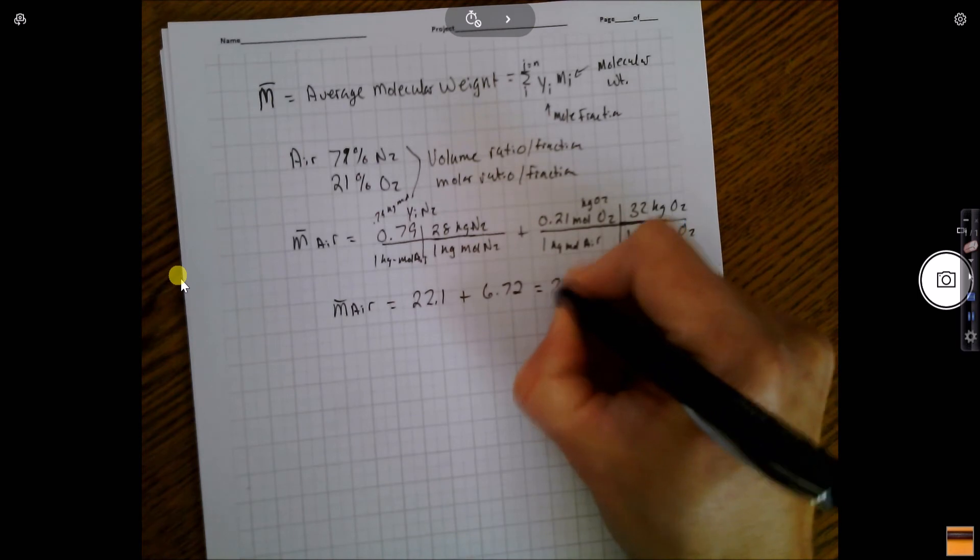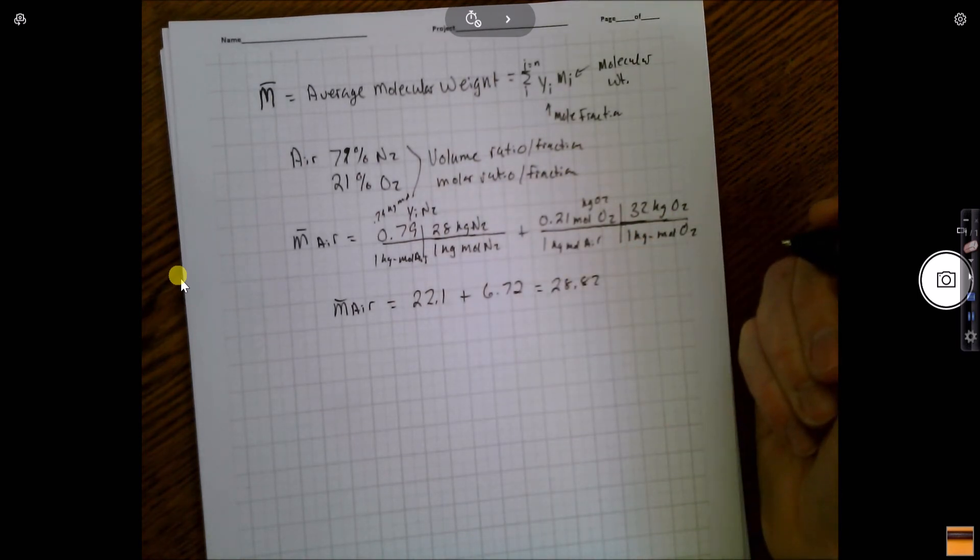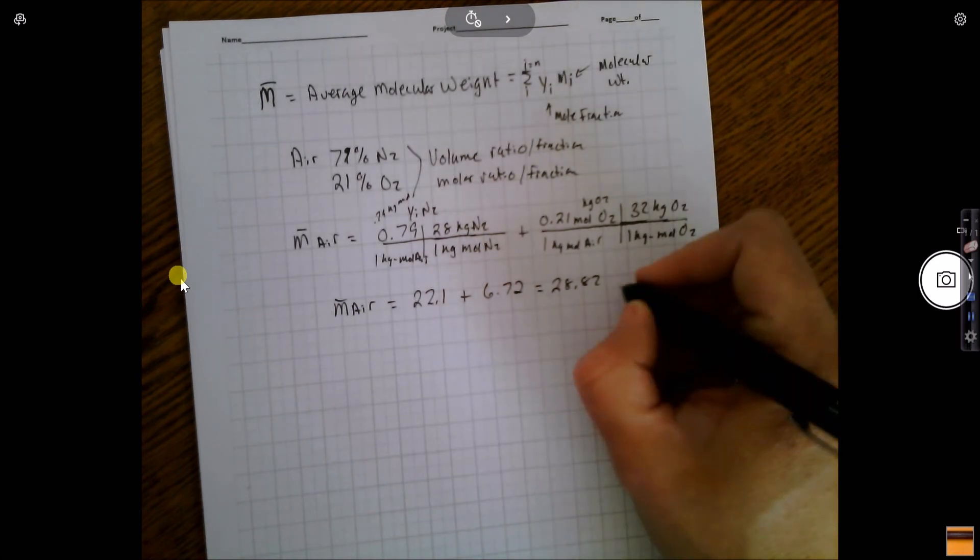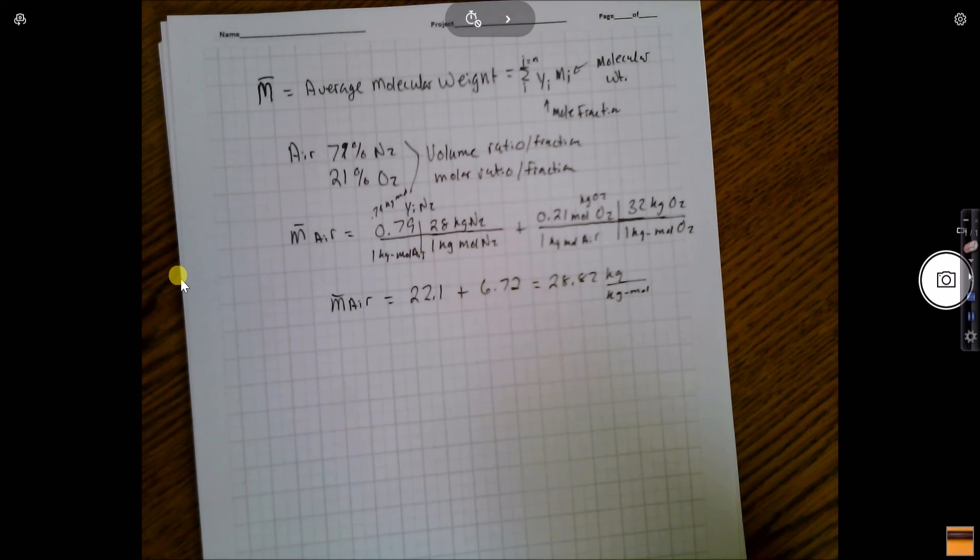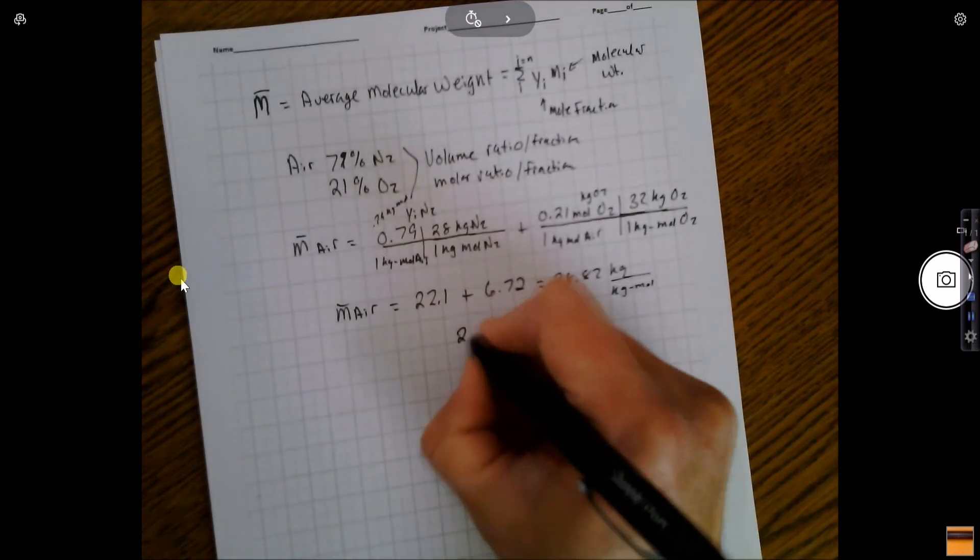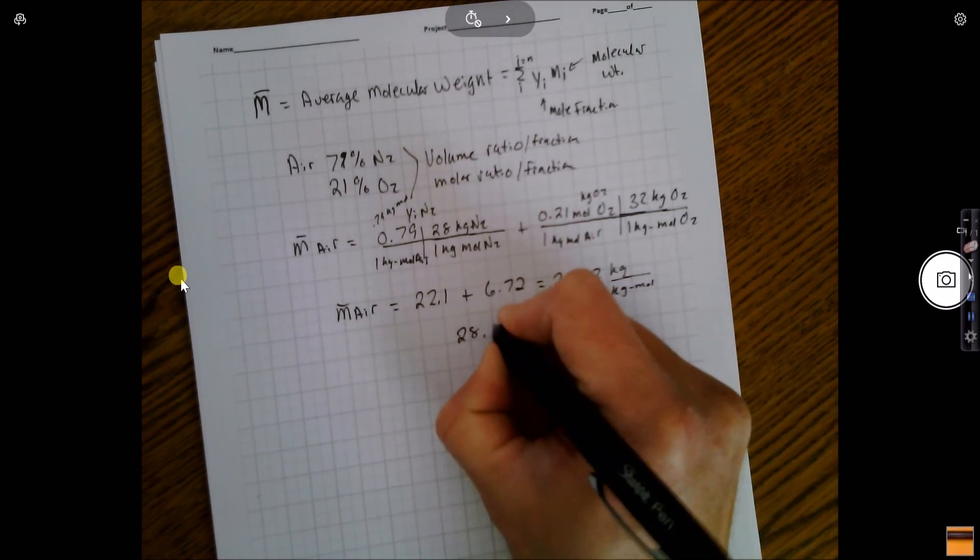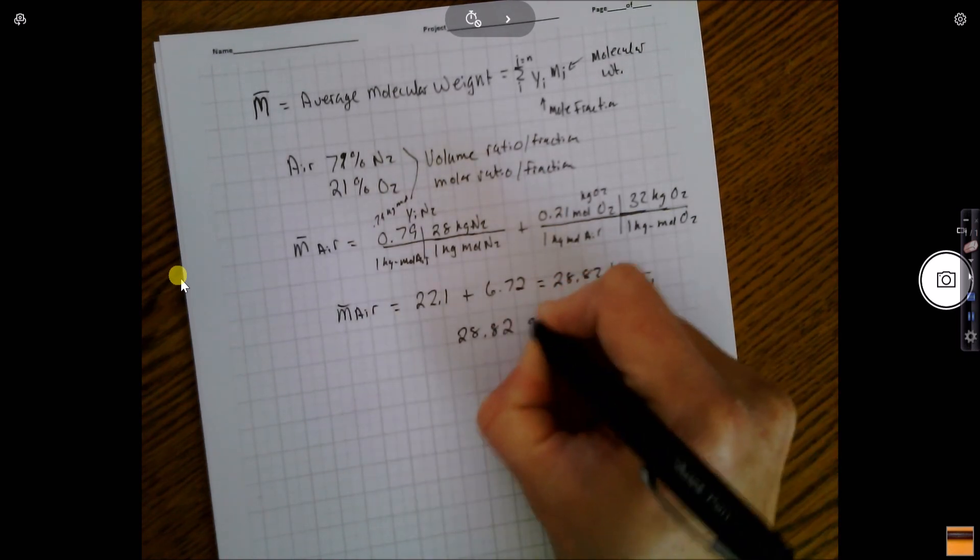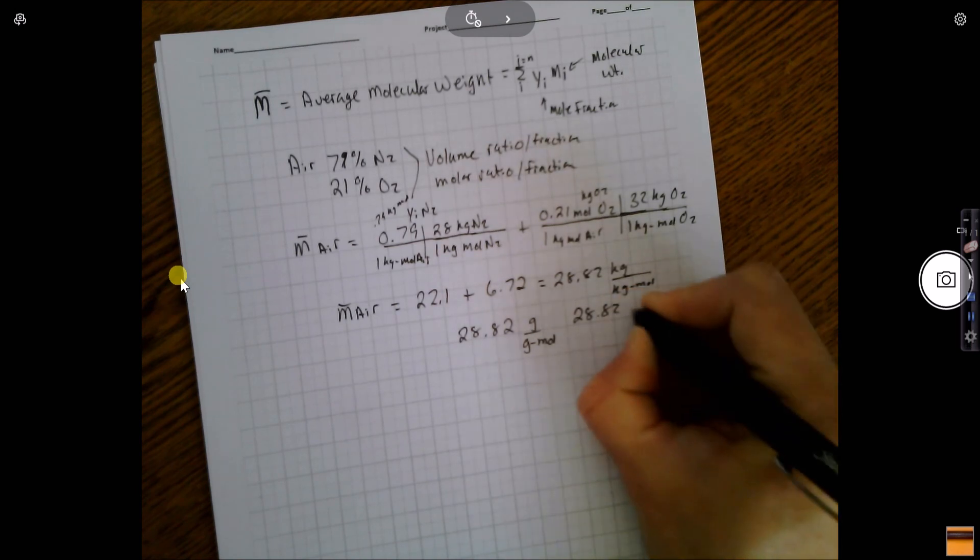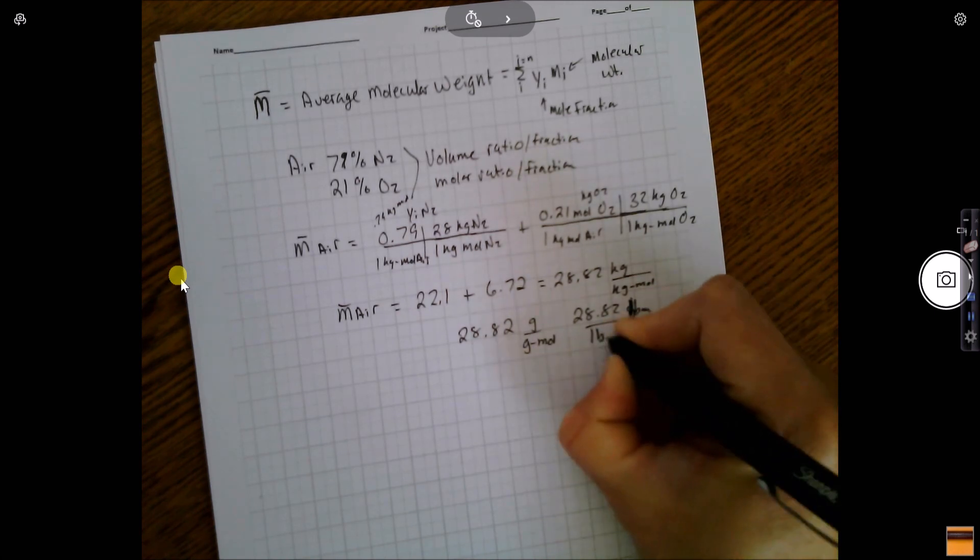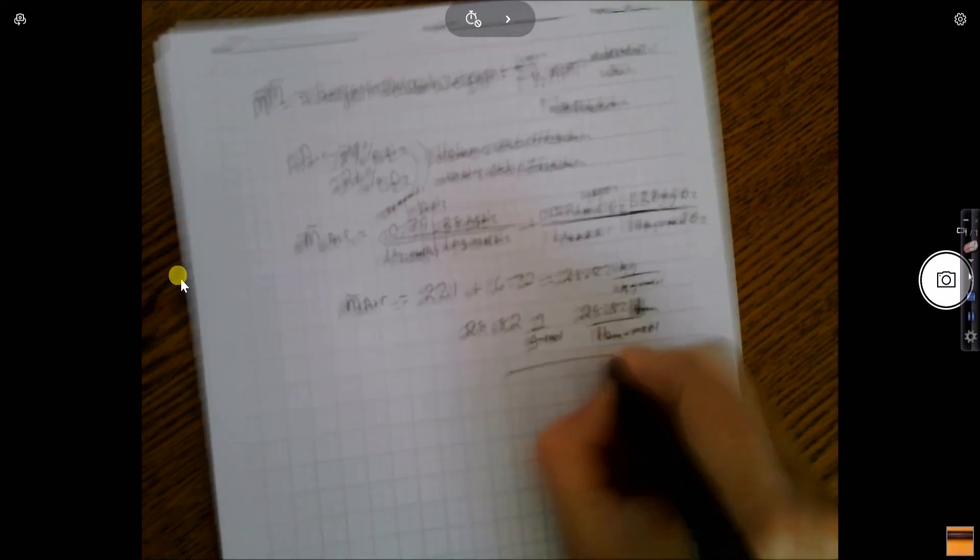That is equal to 28.82, and I think in this place it would be kilograms per kilomole. The same rule applies: the average molecular weight of air is 28.82 grams per gram mole, and 28.82 pounds mass per pound mass mole.